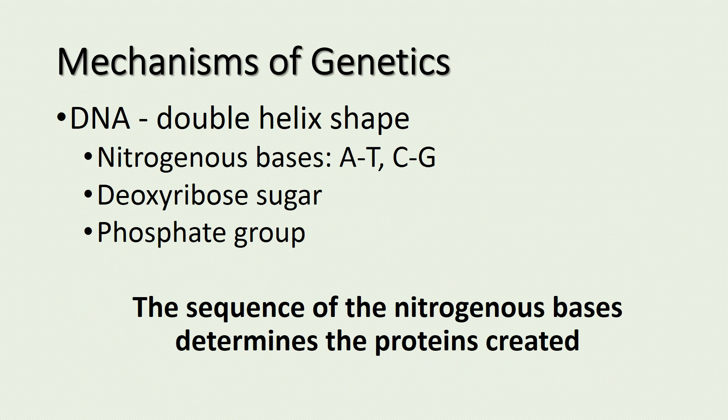DNA — deoxyribonucleic acid — has a double helix shape. The nitrogenous bases that always pair together are A with T (the apples in the tree) and C with G (the cars in the garage). Remember, the deoxyribose sugar and phosphate groups bond together down the sides for the backbone of DNA. It's the sequence of the nitrogenous bases that determines the proteins created and makes us unique.